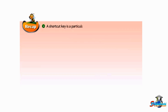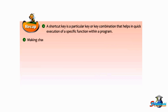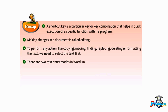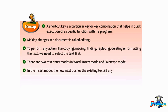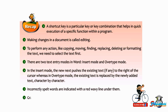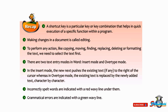Let us take a recap of this chapter. A shortcut key is a particular key or key combination that helps in quick execution of a specific function within a program. Making changes in a document is called editing. To perform any action like copy, move, find, replace, delete, or format text, we need to select the text first. There are two text entry modes: Insert mode and Overtype mode. In Insert mode, new text pushes existing text to the right, whereas in Overtype mode, existing text is replaced character by character. Incorrectly spelled words are indicated with a red wavy line, and grammatical errors with a green wavy line.